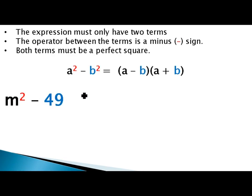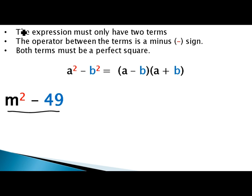Let's go through examples from the handouts. We have the algebraic expression m² minus 49. Checking the guidelines: first, it has only two terms — m² is the first term and 49 is the second term, so that's checked. Second, the operator between the terms is a minus sign, so that's also checked.